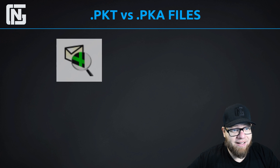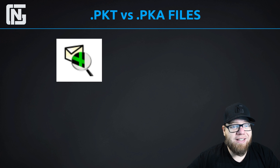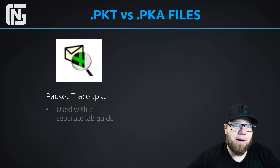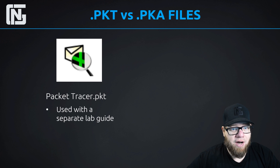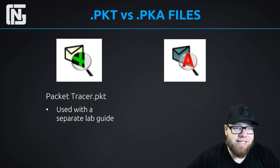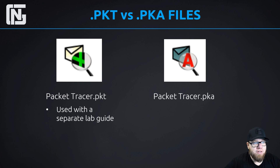The last thing we're going to talk about in this video is the difference between PKT and PKA files. A PKT file looks like a little envelope with a little green T in the bottom corner. PKT Packet Tracer files are typically used with a separate lab guide — you open up Packet Tracer and there's usually an accompanying PDF file that goes along with it. PKA files have a gray envelope with a red A instead of the green T, identifying the PKA. The key difference is that PKA files have an integrated lab guide.